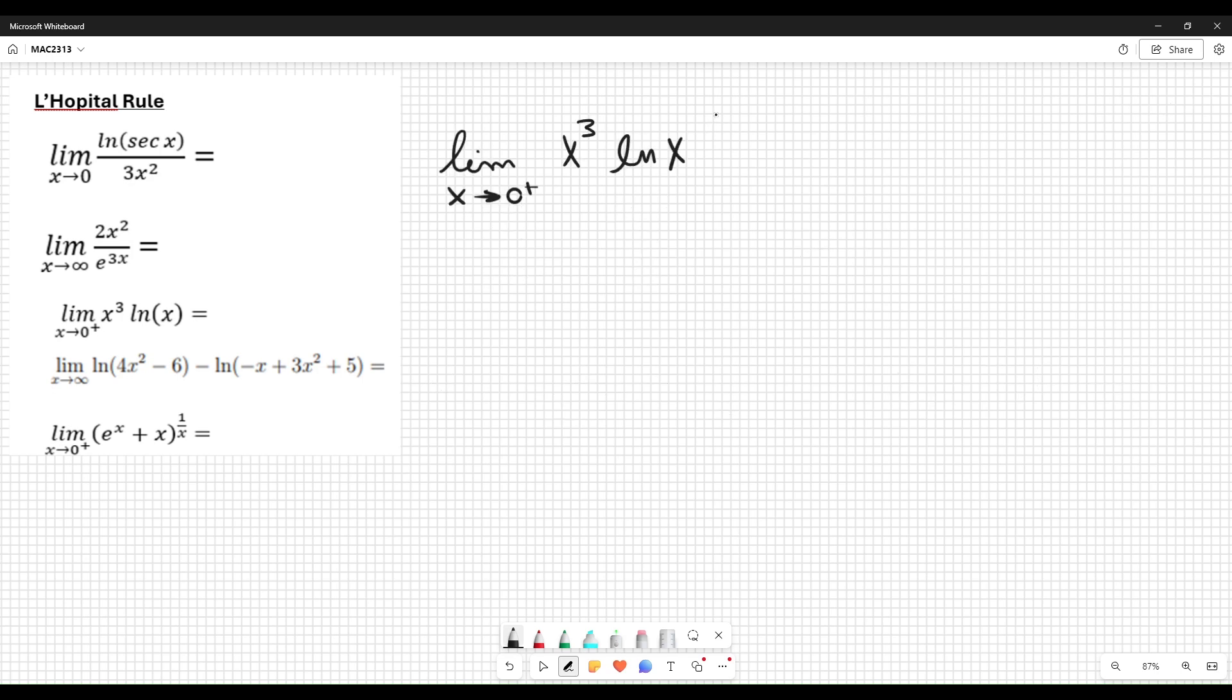Okay. Now plug it in. This is 0 cubed times logarithm of 0 plus. Zero is zero. And logarithm of zero is minus infinity. This is 0 times infinity. This is also indeterminate. But it is another kind of indeterminate. Therefore I need to do something algebraically.